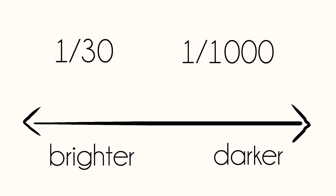Next we have the shutter speed, which is the amount of time that the shutter is open — how long the light is being let in. The slower the shutter speed, the more light will be let in. So a shutter speed at a thirtieth of a second will let in more light than a shutter speed at one thousandth of a second.